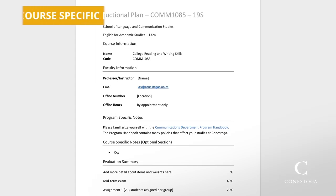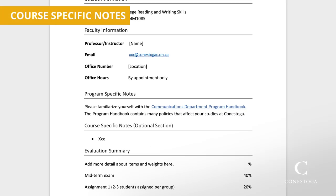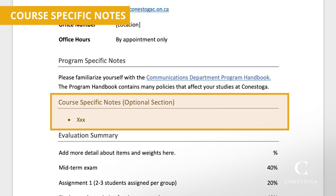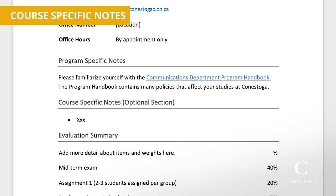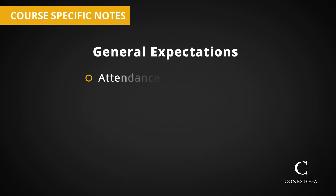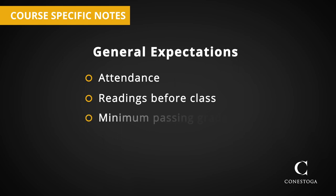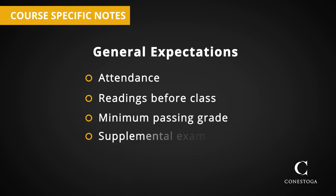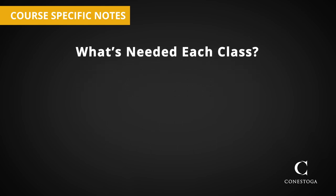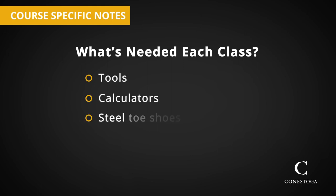Coming back to the instructional plan, now you fill in course specific notes. These are some of the things students need to know to be successful in your class. Here you discuss general expectations — for example, attendance, if students are expected to read before class, what the minimum passing grade is, or if a supplemental exam is possible. This is also where you list what's needed for each class — things like tools, calculators, steel-toed shoes, or other materials they have to have ready.